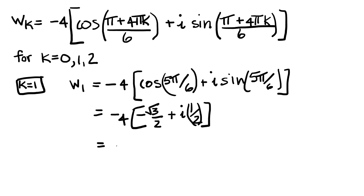And that, when I simplify it, is going to be 2√3 - 2i. And once again, I can check that on my calculator and make sure that it is, in fact, if I cube it, -64i, and I'll find that it is. The last cube root is k equals 2.